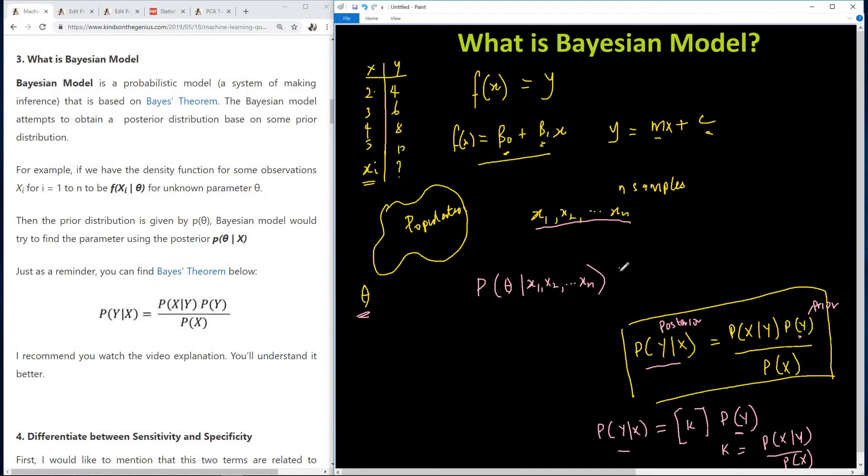It's going to give us P of probability of this parameter given the data we have, X1, X2, all the way to Xn. So this is what we are trying to find, the probability of this parameter given this data set. So it will now give us, simply substitute this using Bayesian theorem, you have probability of the data set X1, X2, Xn given this, times the probability of this parameter. This now is a prior, which you already know, divided by, in this case, the probability of the data set you have.